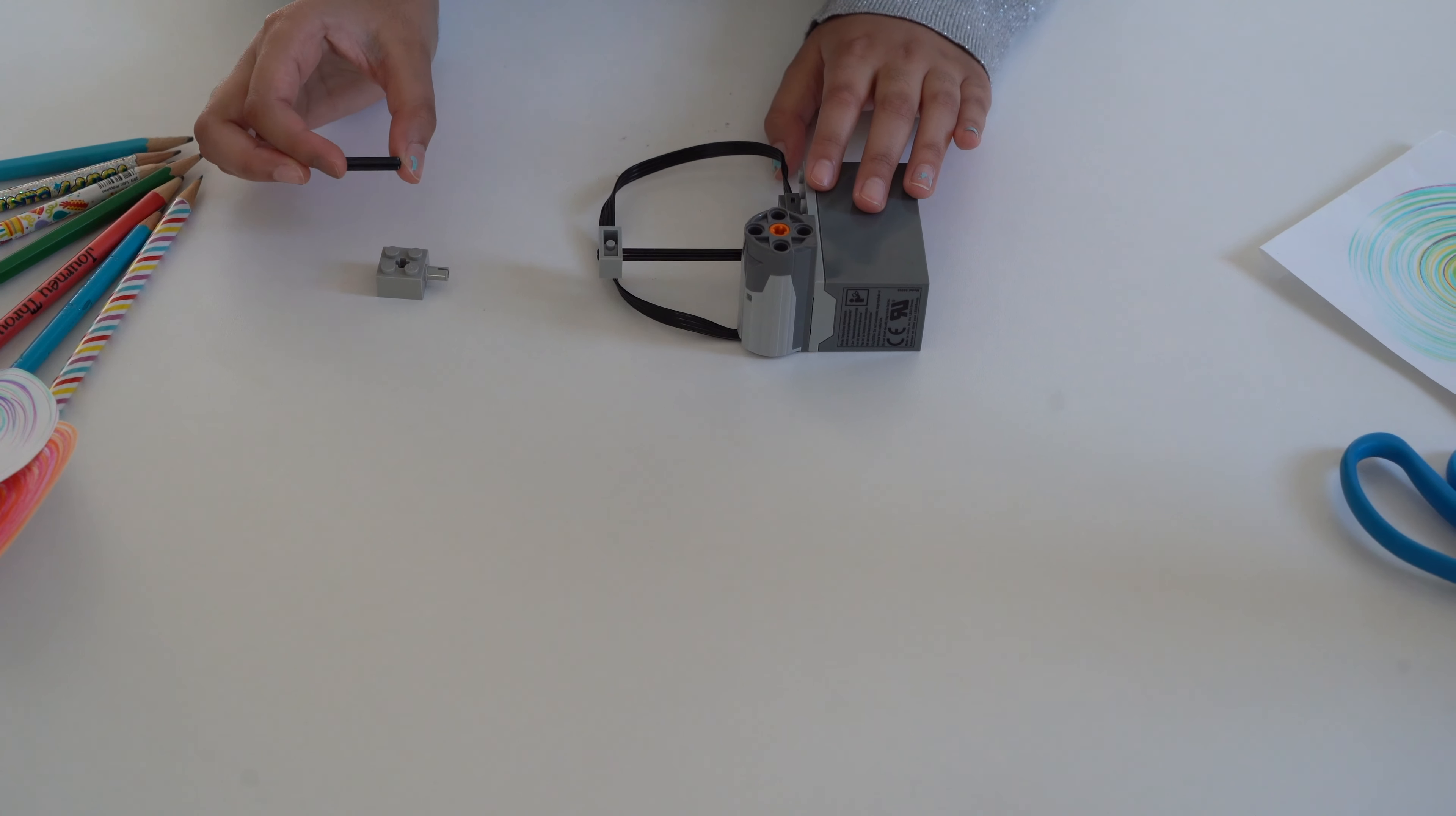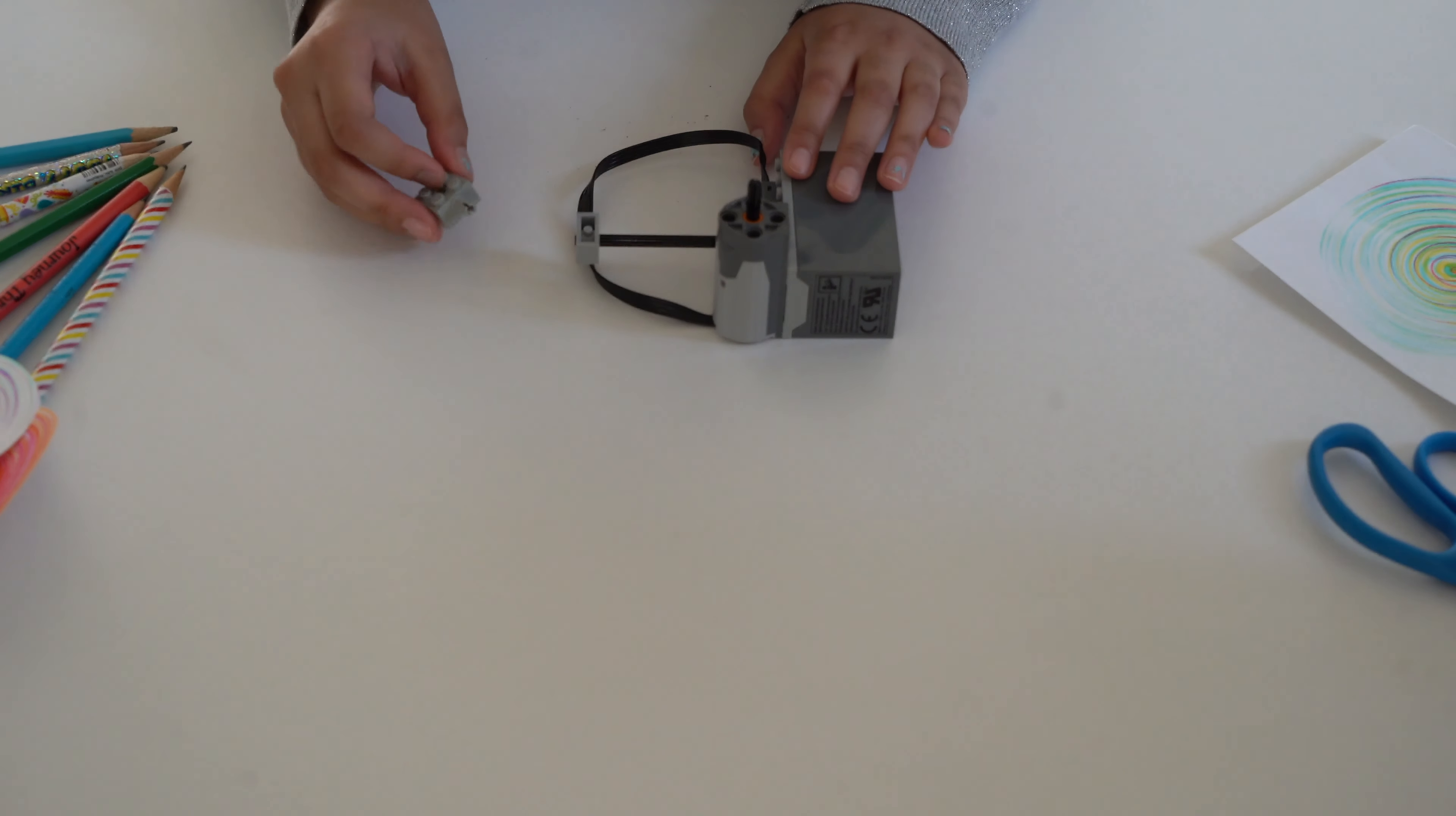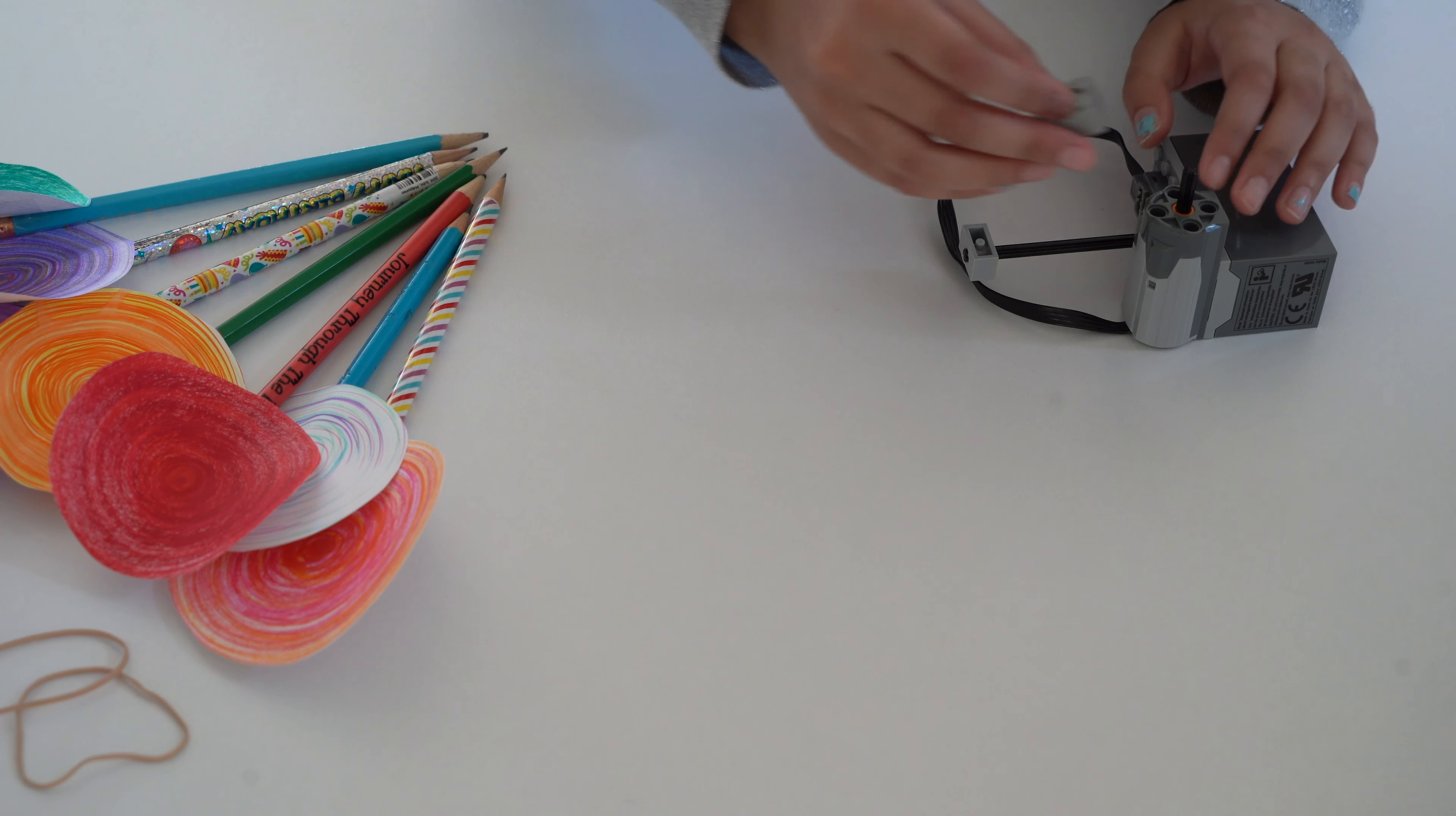For the motor I'm going to put in the smallest one-inch axle because it makes it stronger and more stable for the paper. And then finally, I'm going to put on this two-by-axle piece but you can use any axle piece.